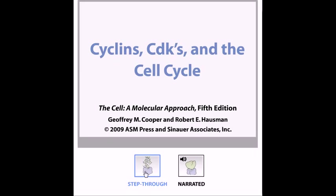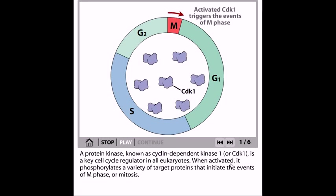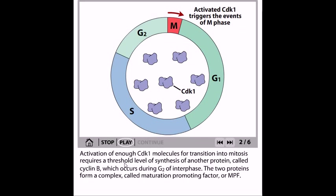Now, protein kinase known as cyclin-dependent kinase, or CDK. CDK1 is a key cell cycle regulator in all eukaryotic cells. When activated, it phosphorylates a variety of target proteins that initiate the events of M phase or the mitotic phase. The activation of enough CDK1 molecules for transition into mitosis requires a threshold level of synthesis of another protein.